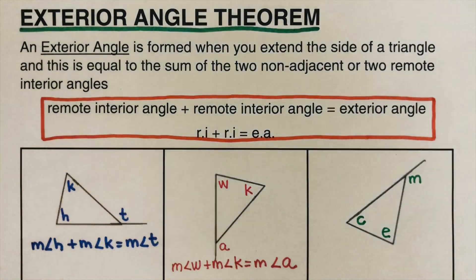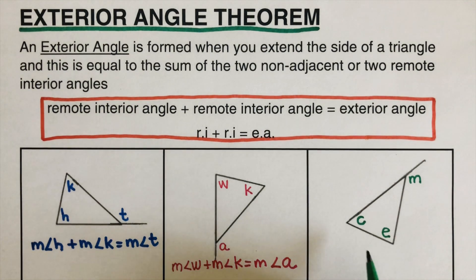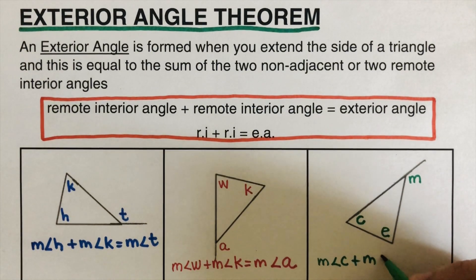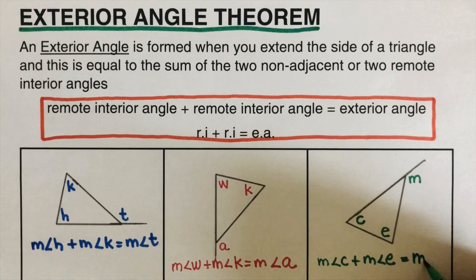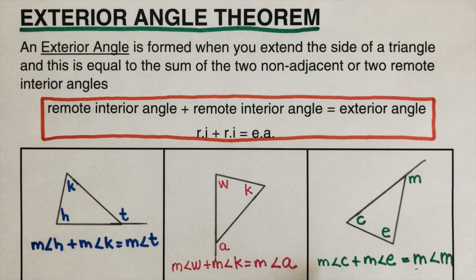Now let's do the third one. I encourage you to pause this video and try this problem on your own, then check your answer. The measure of angle C plus the measure of angle E — these are the two remote interior angles — is equal to the measure of the exterior angle, which is angle M. Did you get the same answer? Good, perfect.